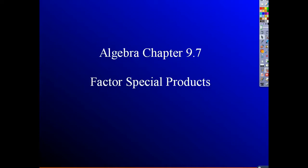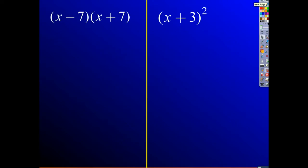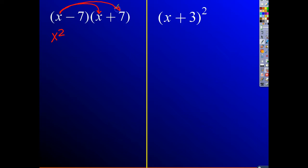Moving right along into factoring special products. This is going to take us back a little bit. If you remember earlier in this chapter, we started talking about multiplying products to get special polynomials out of this. So if you have something that looks like this — this is the one we call the difference of squares. We're going to expand this out and multiply these two binomials together. We take x times x and get x squared, x times 7 gives plus 7x, negative 7 times x gives negative 7x, and negative 7 times 7 is negative 49.